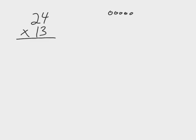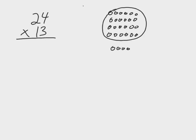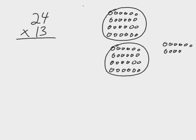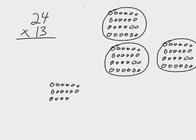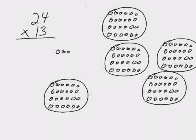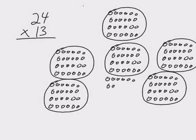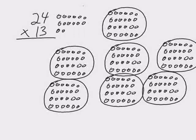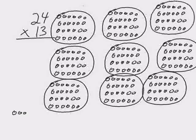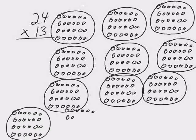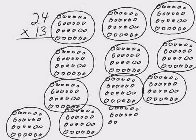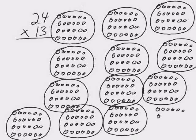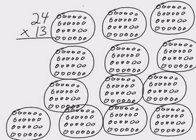Here you go. This is the way it used to be done 3,000 years ago. You'd just throw pebbles in the sand and you'd make 24 packets of 13. Here's one packet, here's another packet. That makes two packets of 24. We're going to make 13 packets of 24 and then add them all up.